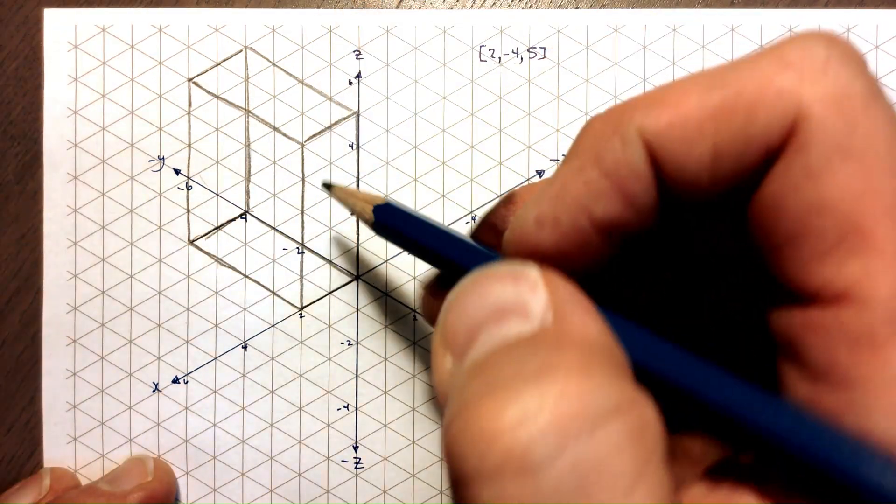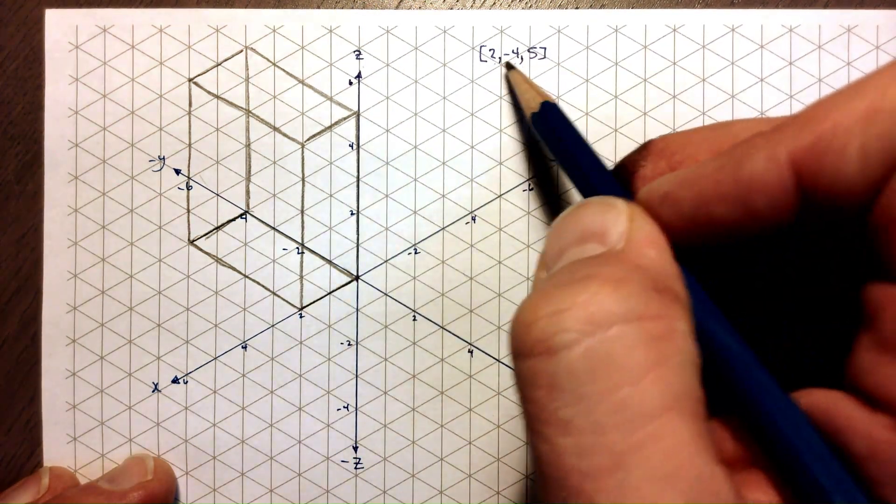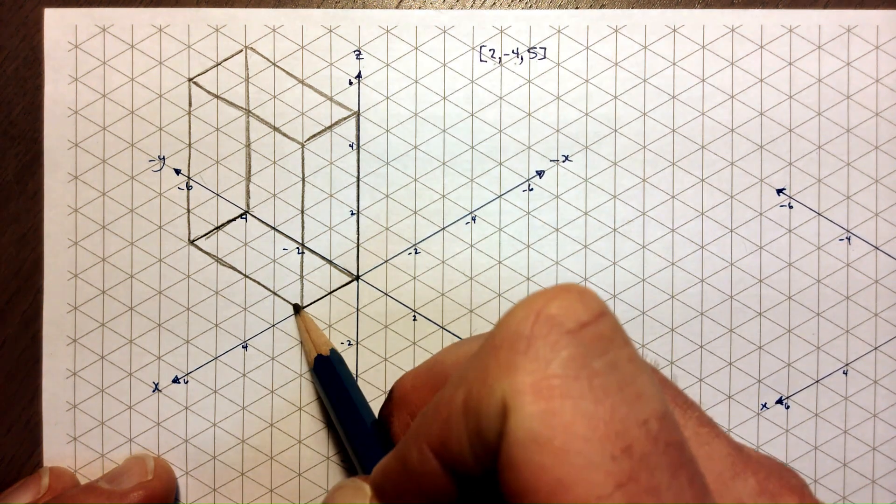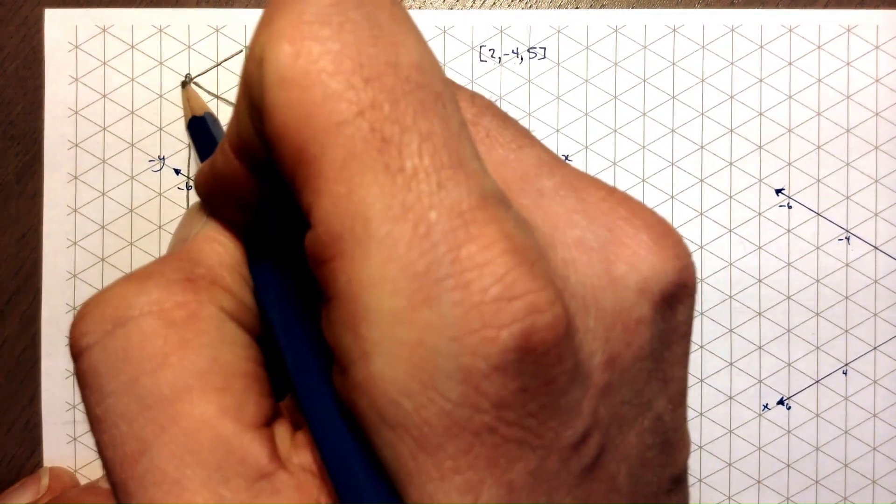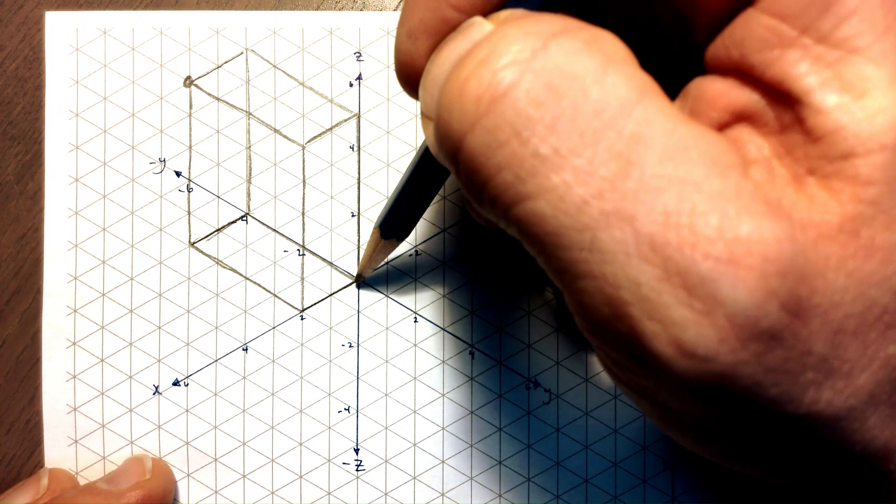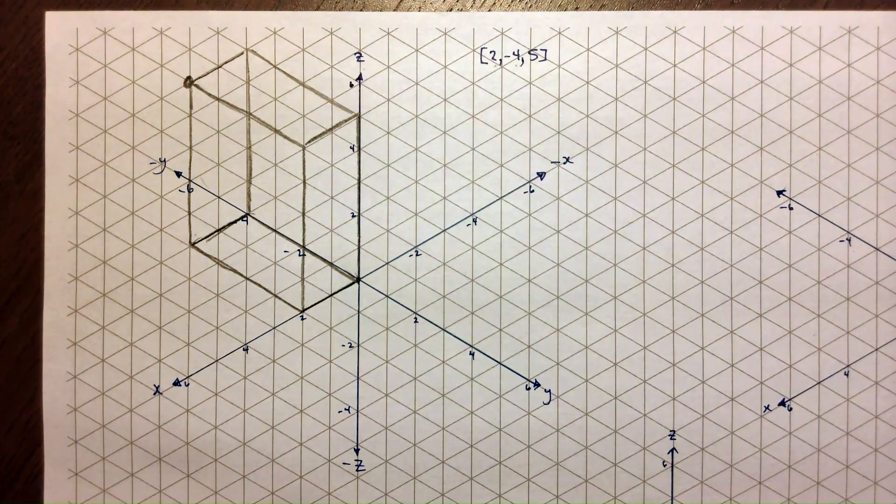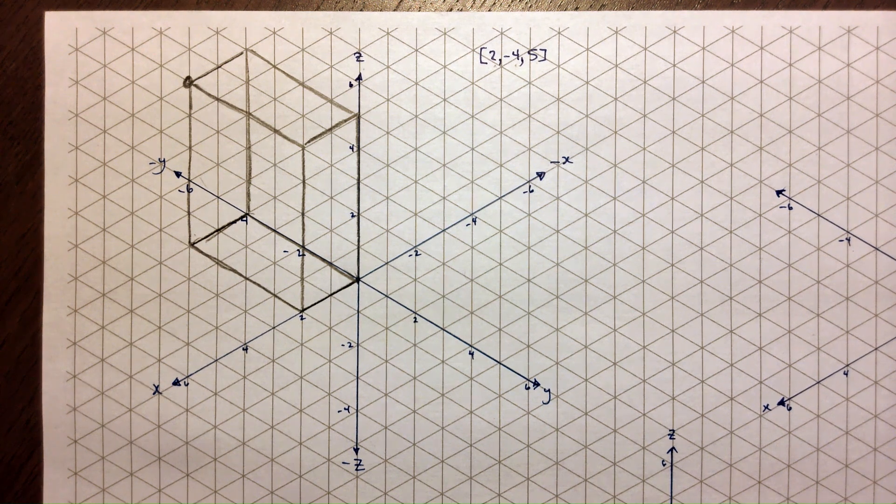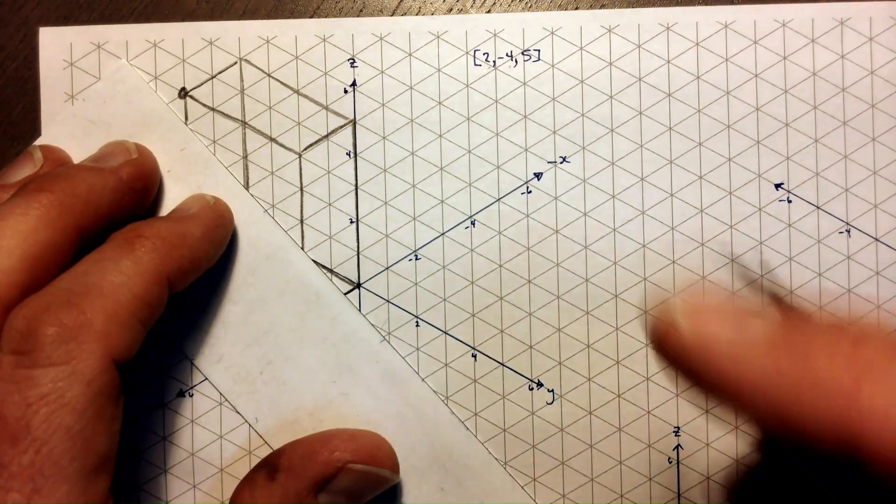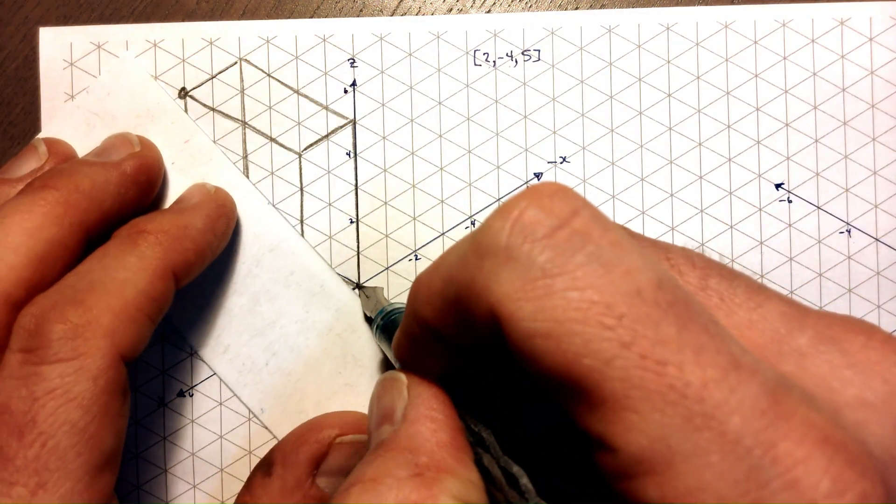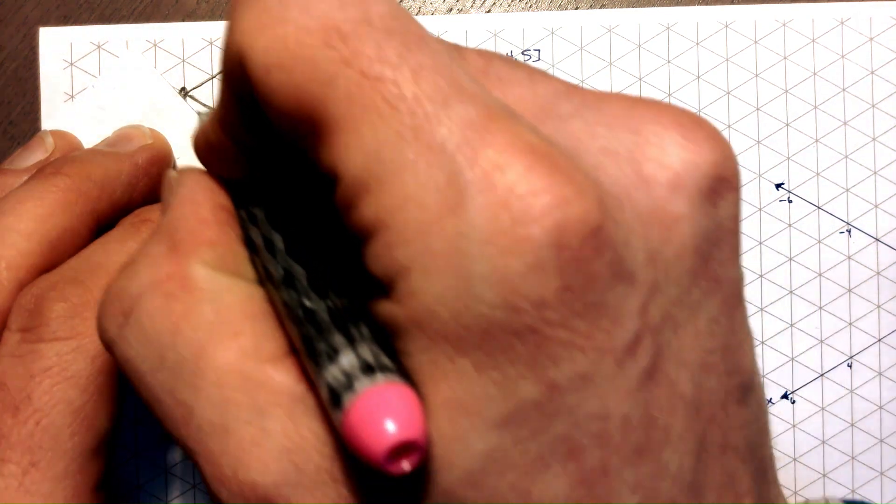Now the coordinate once again is (2, -4, 5). This here is the end of this position vector from (0, 0, 0) out to (2, -4, 5). Let me get something a little darker here. And a ruler is good. Let's just draw that vector right there.